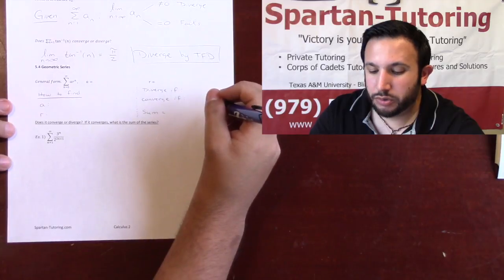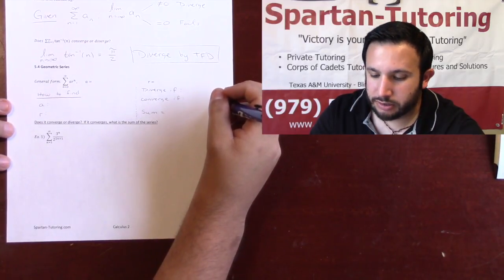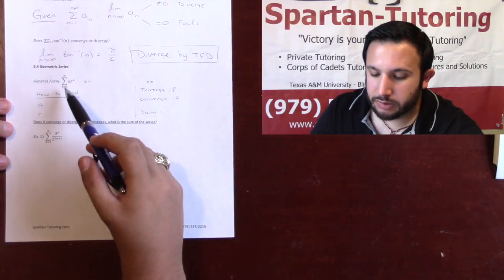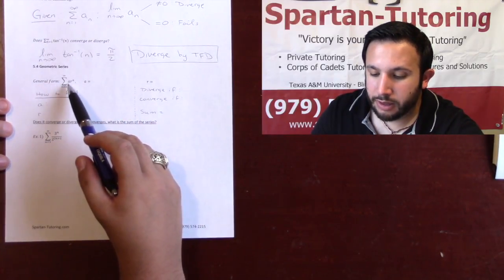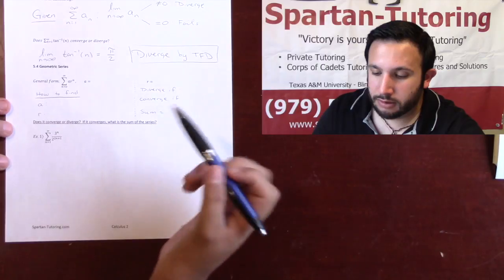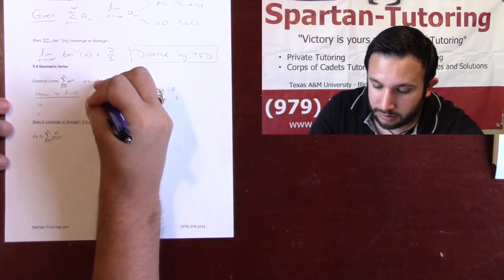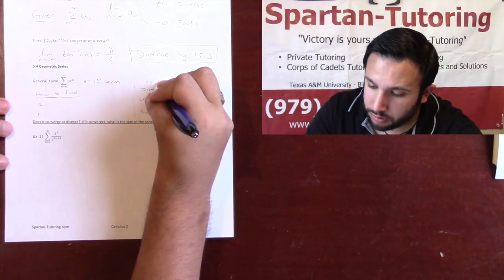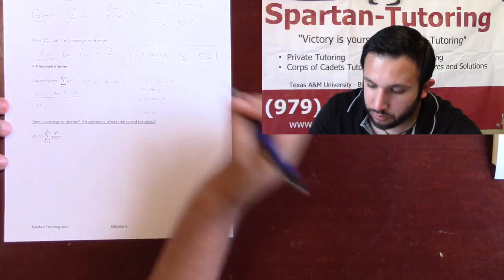Howdy. In this video, what we're going to do is we're going to talk about geometric series. Now, the general form for a geometric series is going to be the sum from zero to infinity of a r to the n, where a is going to be your first term, and r is your ratio.